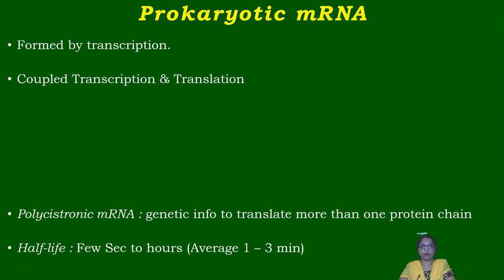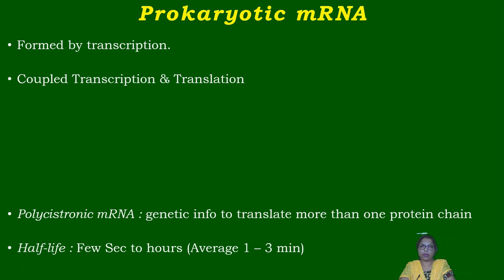There are two types of mRNAs: prokaryotic mRNA and eukaryotic mRNA. Both are formed by the process of transcription. In prokaryotes, coupled transcription and translation takes place.